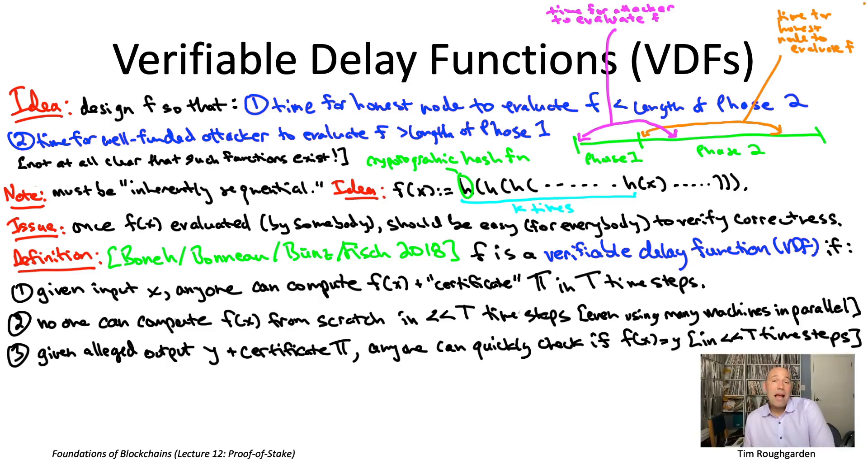So believe it or not, it is possible, at least in principle, to generate certificates that allow someone to quickly check that you actually iterated a cryptographic hash function a prescribed number of times. That follows from a fairly general sort of tool known as a SNARK, which perhaps we'll have something to say about in future lectures in this series.